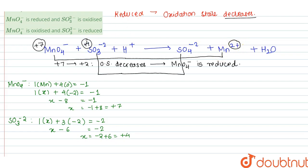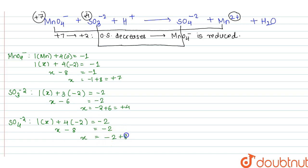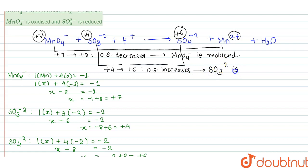Now coming to SO4²⁻: 1×X + 4×(−2) = −2. Therefore X − 8 = −2, so X = −2 + 8 = +6. In SO4²⁻, the oxidation state of Sulphur is +6. So here the oxidation state changes from +4 to +6, meaning the oxidation state is increasing. When the oxidation state increases, it is oxidation. So in this case, SO3²⁻ is getting oxidized.